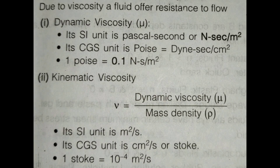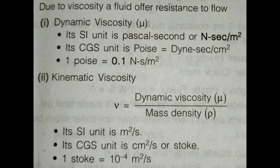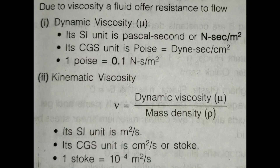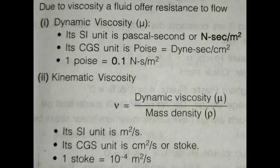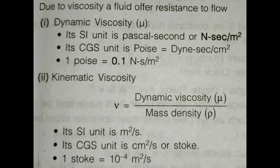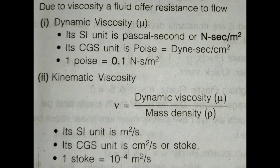Due to viscosity, a fluid offers resistance to flow, similar to friction. Dynamic viscosity is denoted by mu. Its SI unit is pascal-second, which can also be written as newton-second per square meter. In CGS units, it is poise or dyne-second per square centimeter. One important equation: 1 poise equals 0.1 newton-second per square meter.